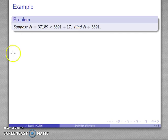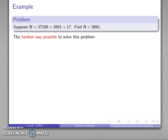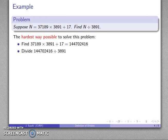So let's try a harder problem. Suppose N is 37,189 times 3,891 plus 17, and we want to find N divided by 3,891. Here's where actually knowing what you know makes this more difficult, because you're tempted to do this problem the hardest way possible, which is to find this product and sum, and then to divide to get an answer.